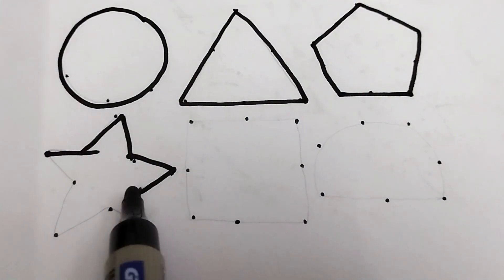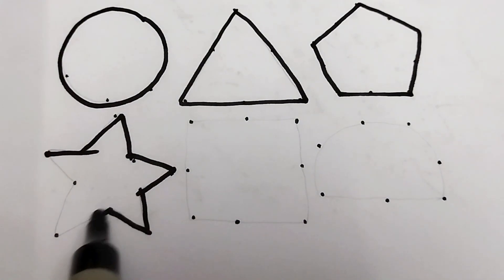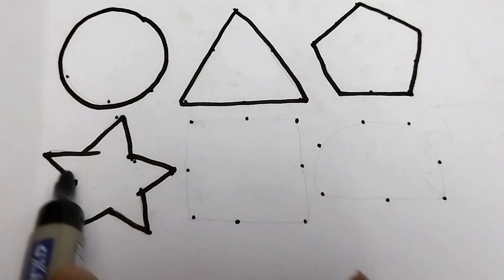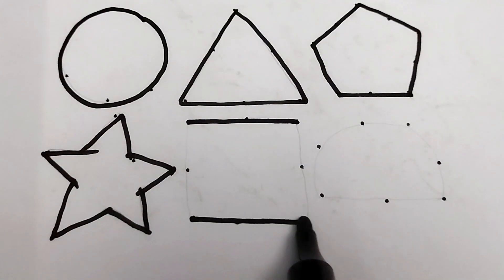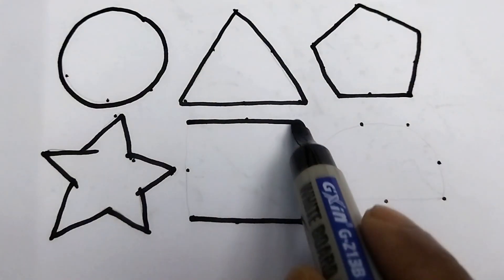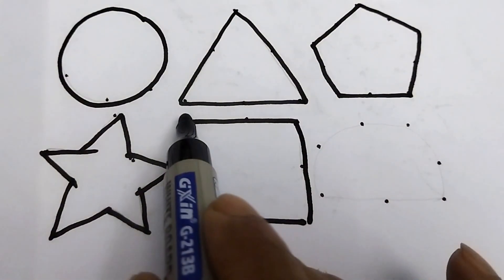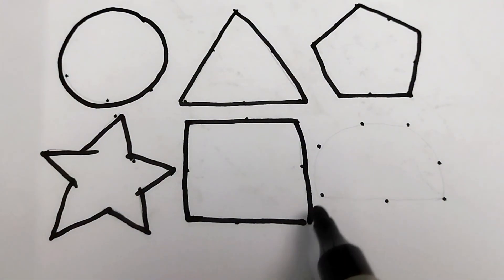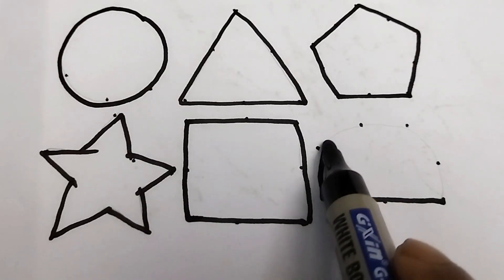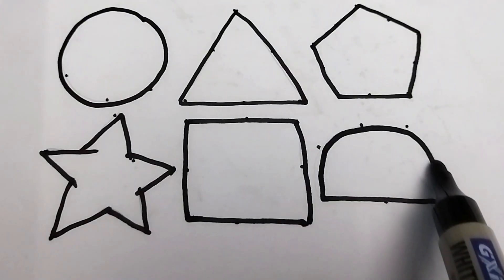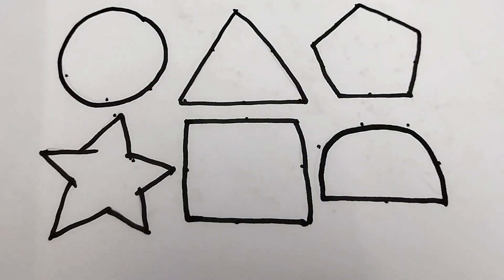This is star. This is square. Square. Semi-circle. This is semi-circle.